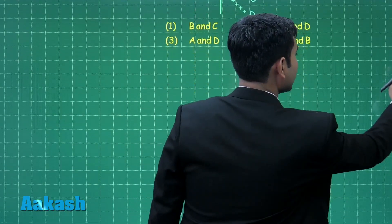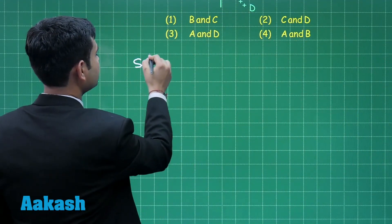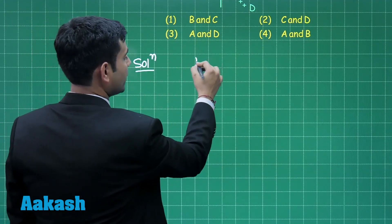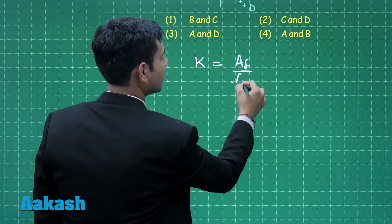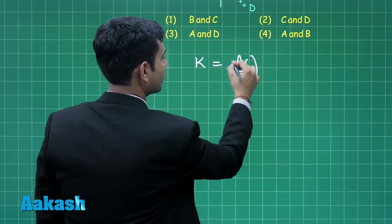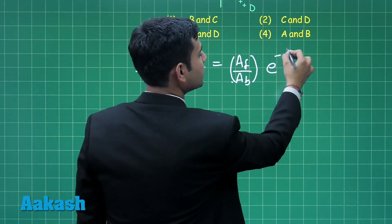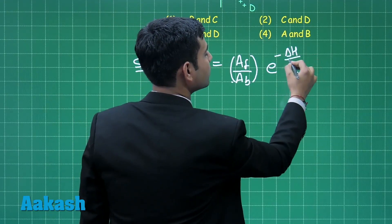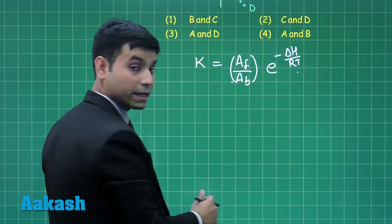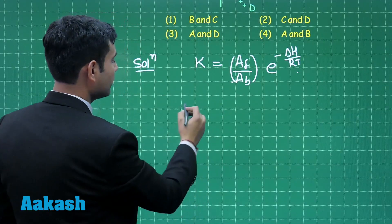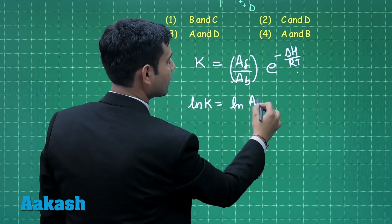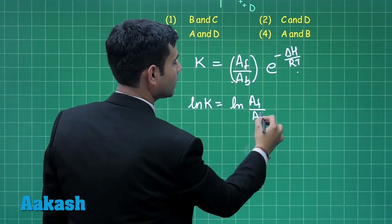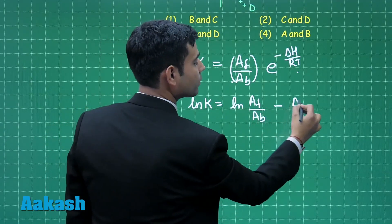Let us write the equation for the equilibrium constant. K is equals to AF by AB e to the power minus delta H upon RT. Taking natural log both sides it will give us ln K is equals to ln AF by AB minus delta H upon RT.